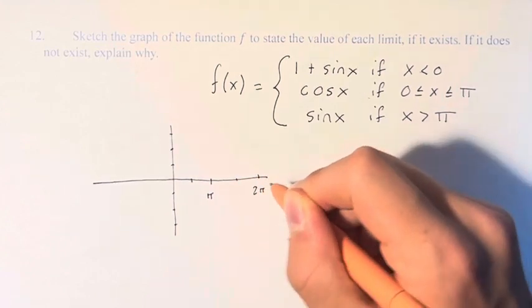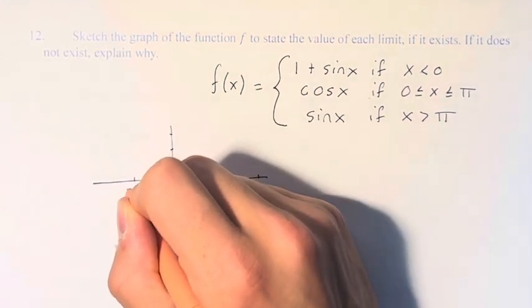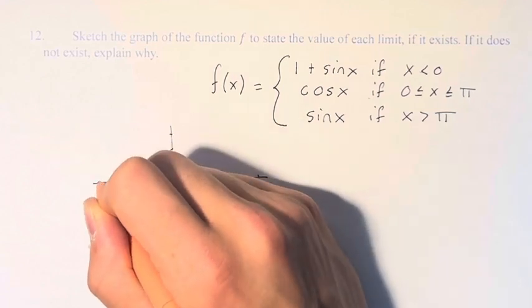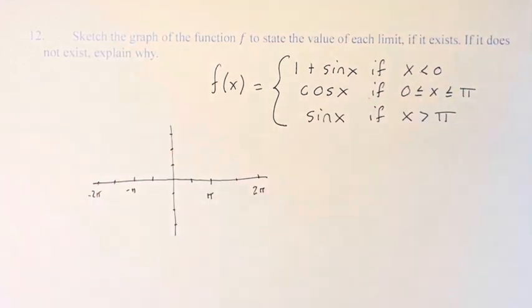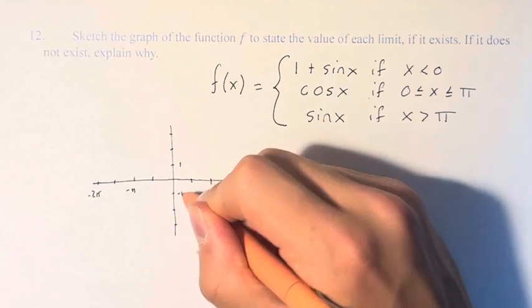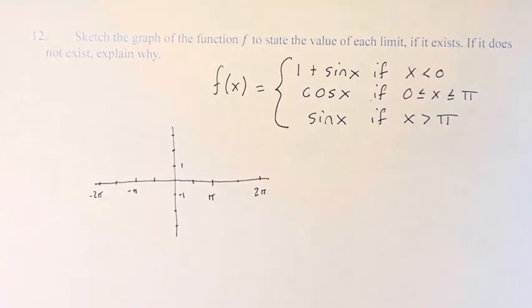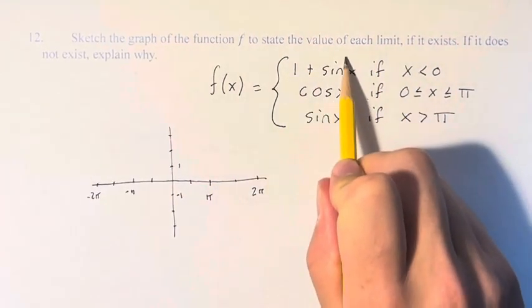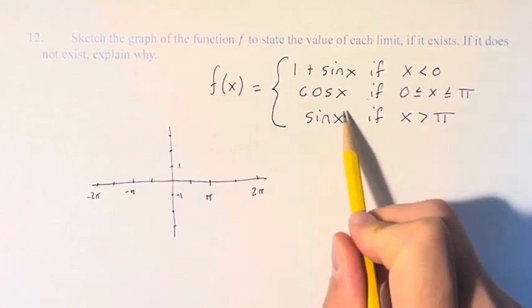And the easiest way to graph these functions is to graph them in their entirety and then do the domain restrictions. So we're going to graph them. We have 1 plus sine of x and sine of x. So let's start with sine of x.